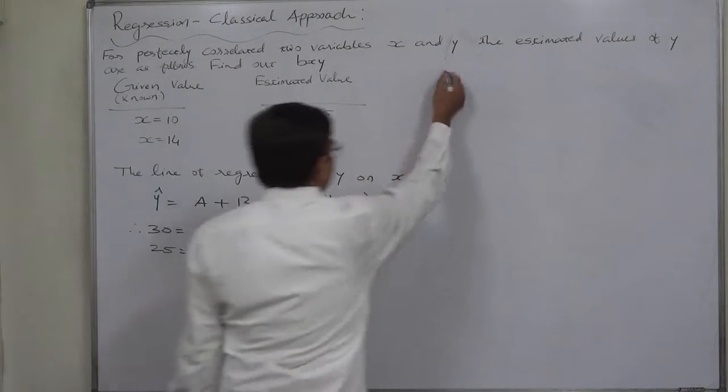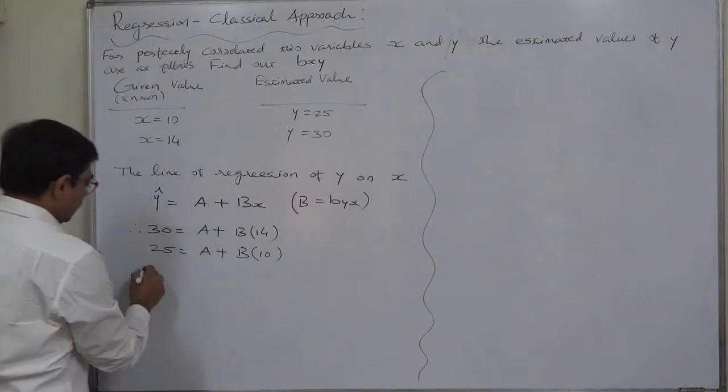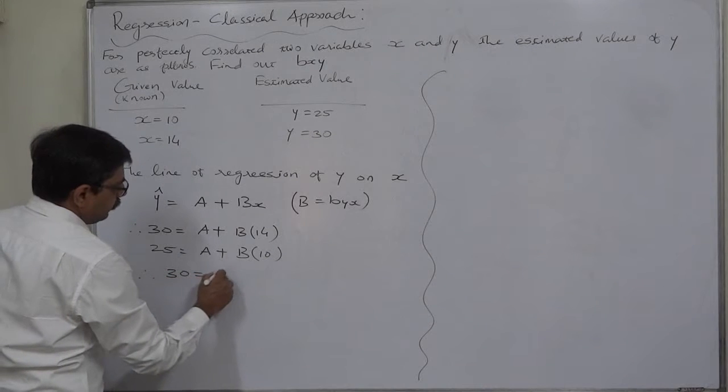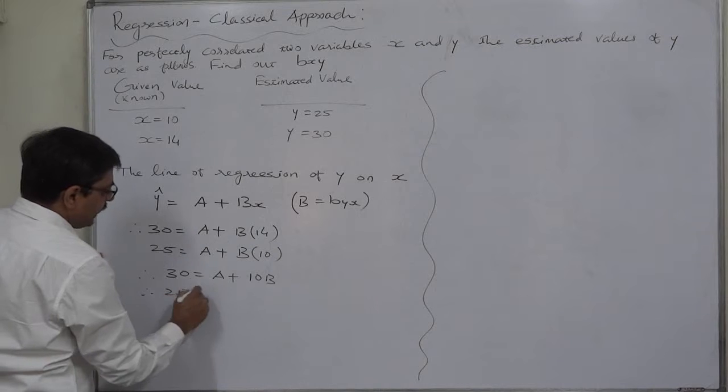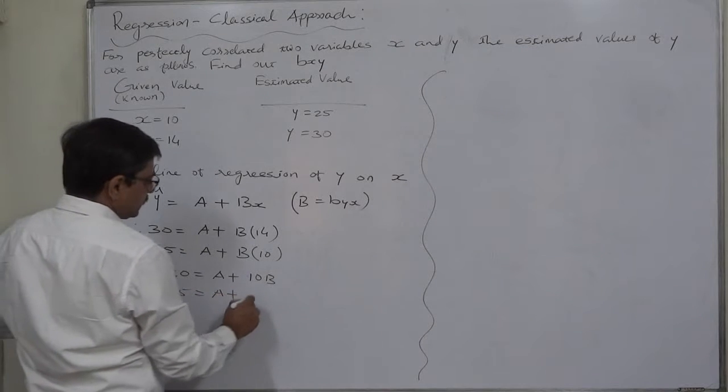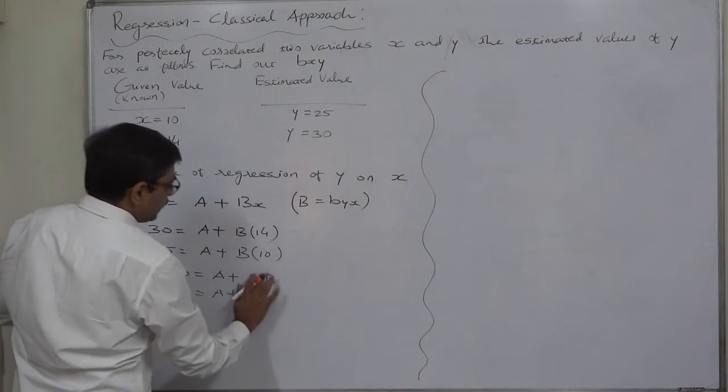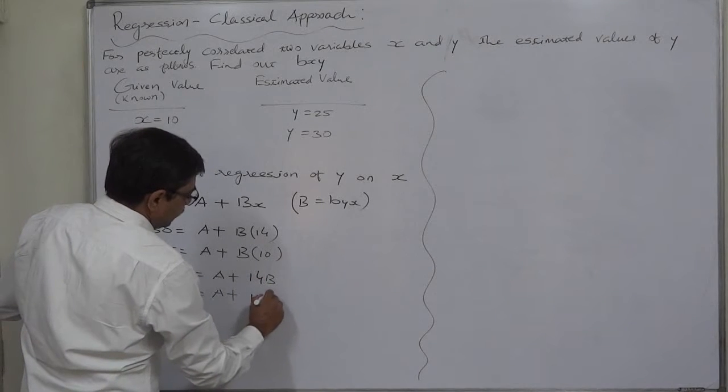Now we can say that 30 equals to a plus 10b. And 25 equals to a plus, sorry here it is 14b and here it is 10b.